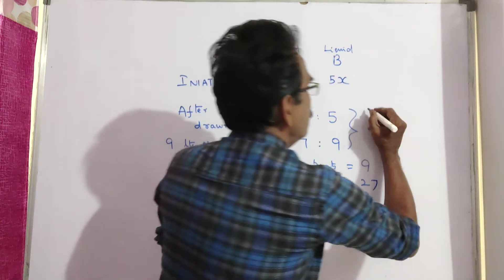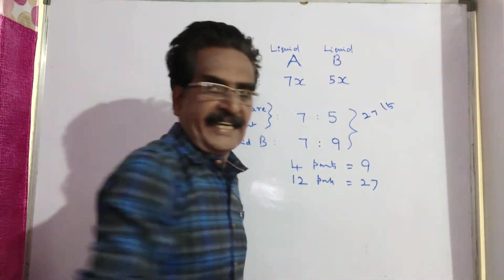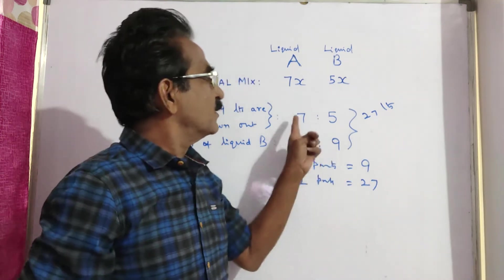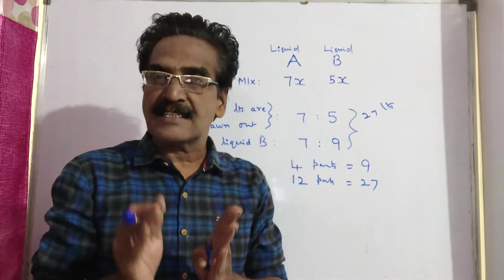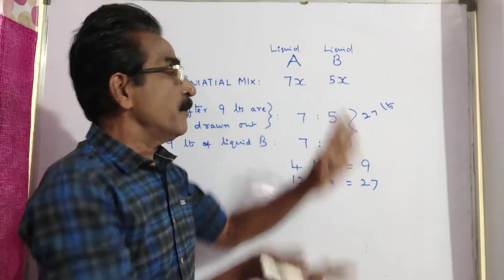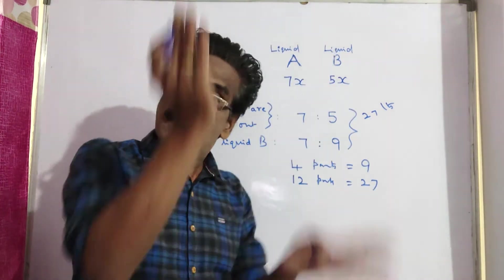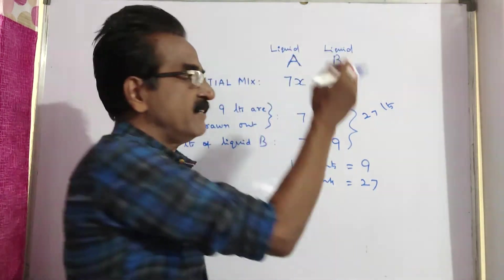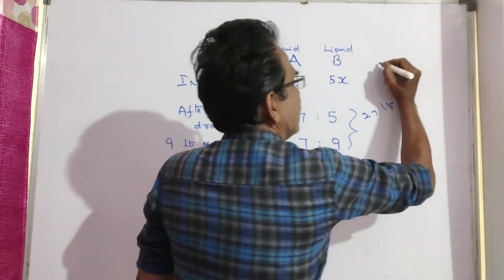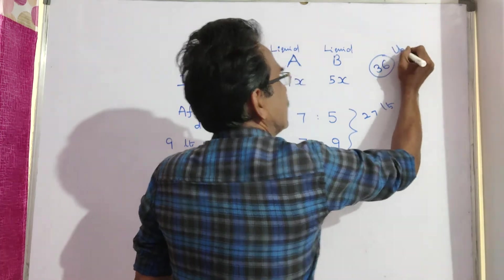So 27 liters of mixture was there after drawing 9 liters. Before drawing — that is the original quantity — the original quantity of the mixture was 27 plus 9, which equals 36 liters.